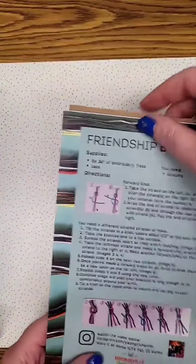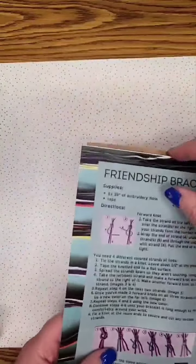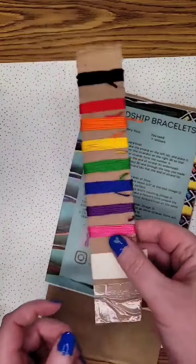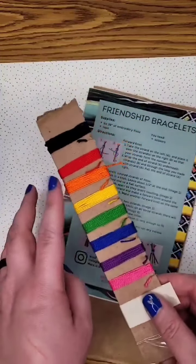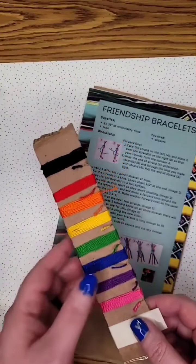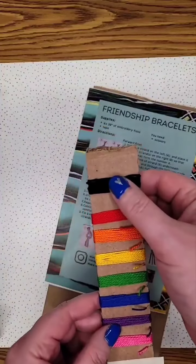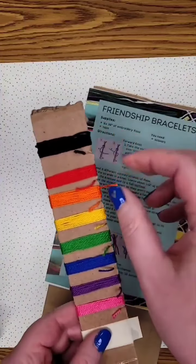In your packet, you obviously have your directions on the outside and the inside. You've got your cardboard with eight different colors of embroidery floss and they're all about thirty inches, give or take.